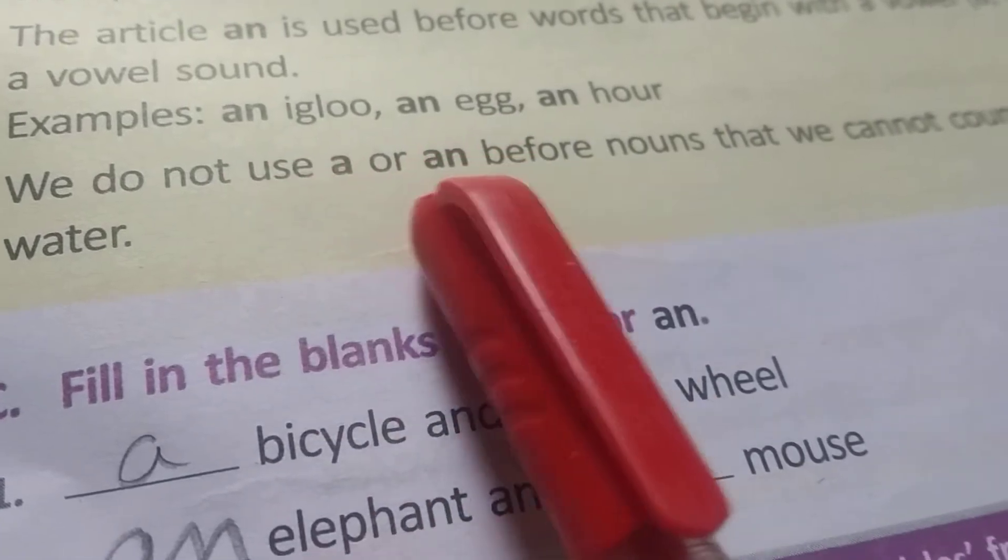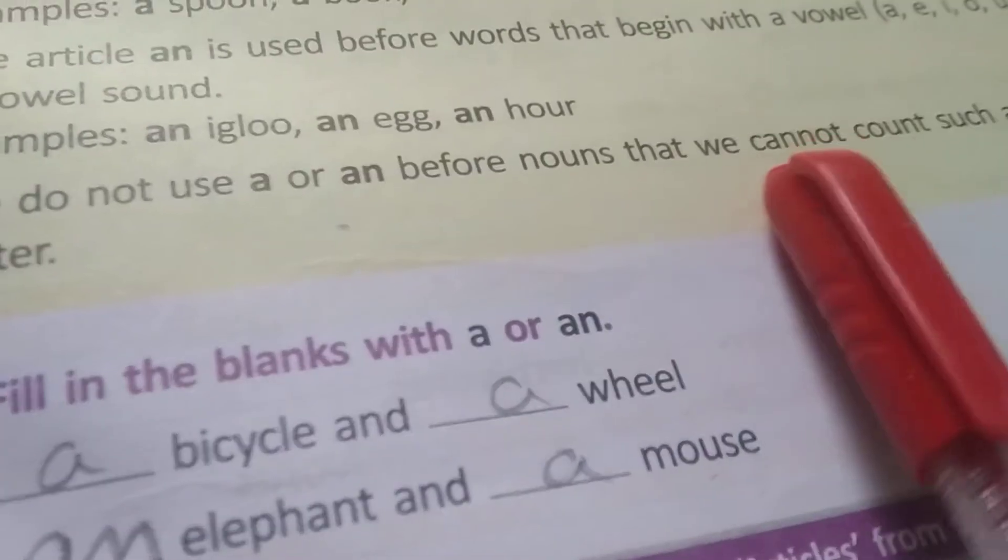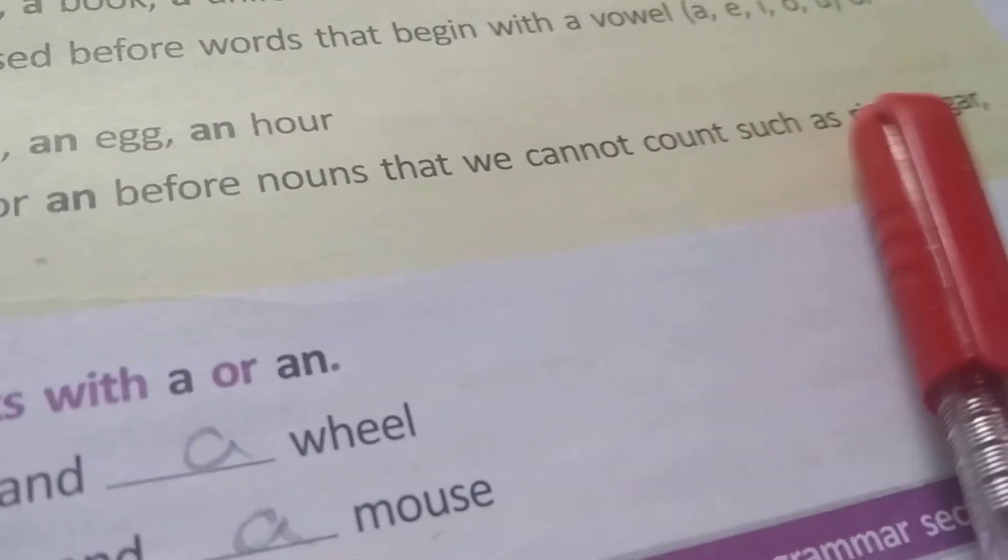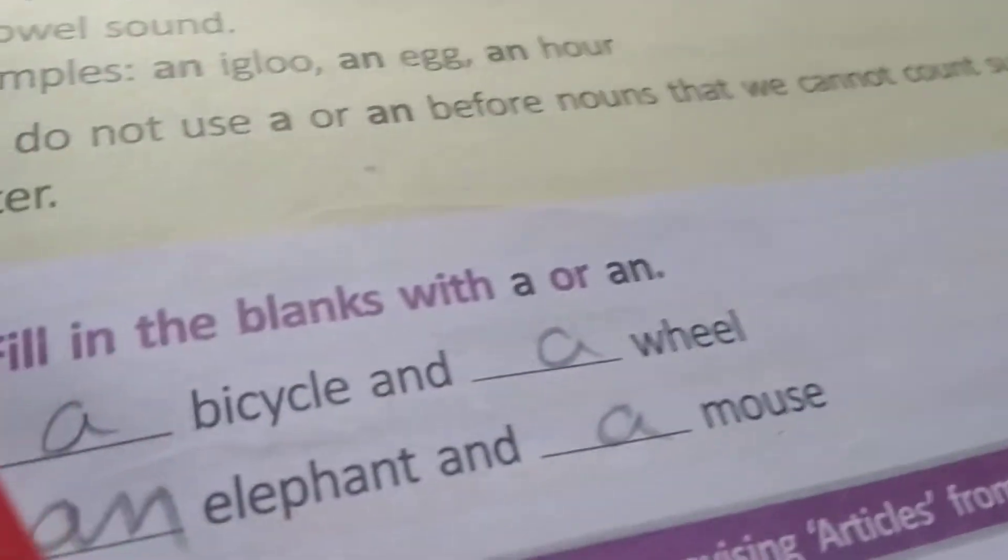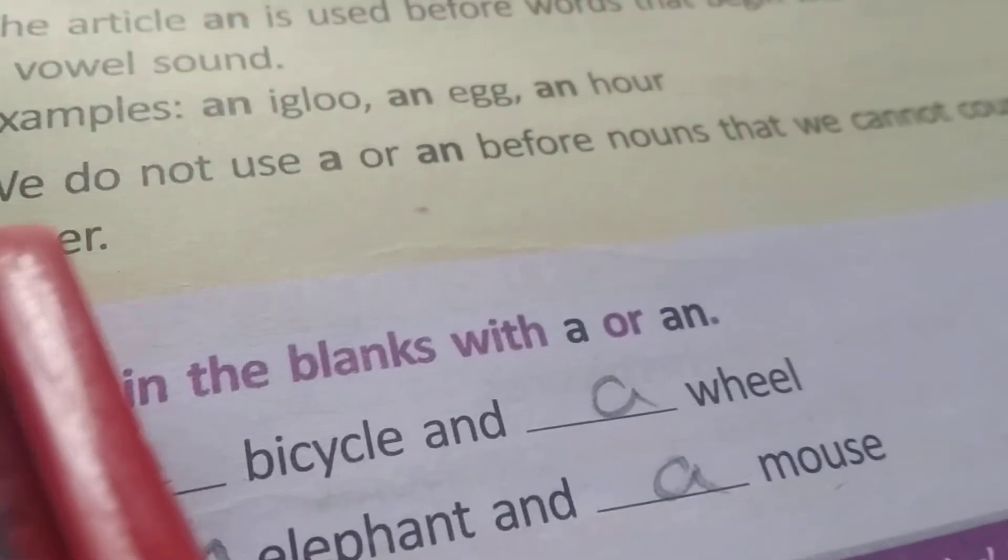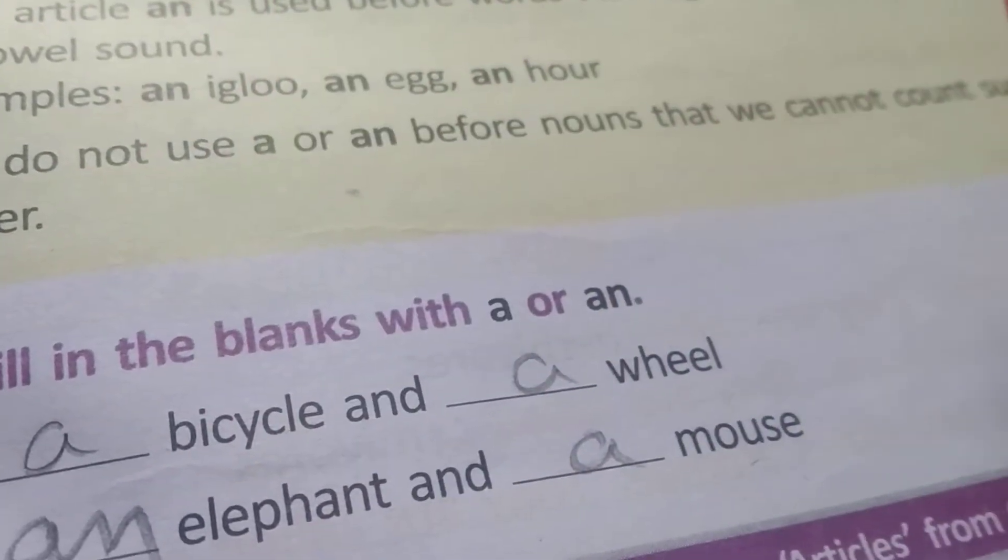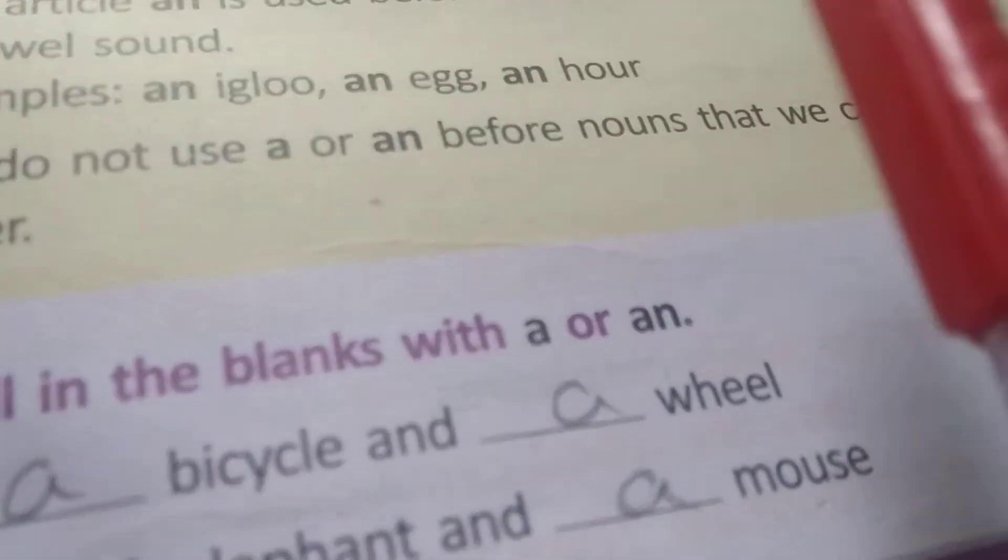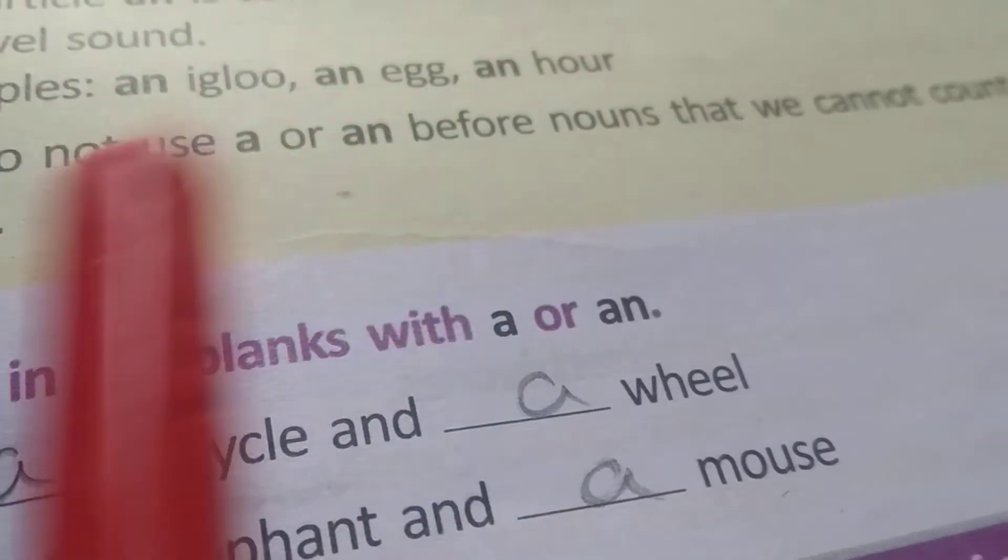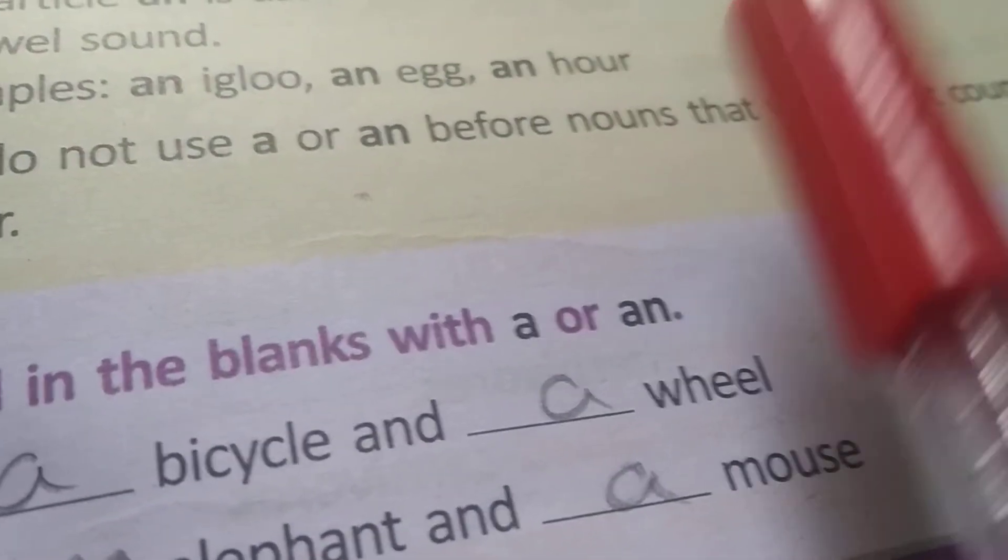We do not use a or an before nouns that we cannot count, such as rice, sugar, water. We do not use. Jahaan pe plural noun hota hai, wahaan pe a or an ka use nahi hota hai. For example, a sugar, a water, we don't use.